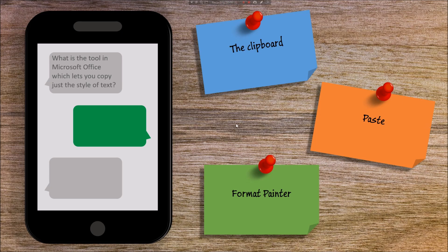Here I have it running now. On the left-hand side I have my simulated mobile phone, and on the right-hand side I have three possible responses. On the left we've got a text message that says 'What is the tool in Microsoft Office which lets you copy just the style of the text?' and it's up to us to fill this response with one of these three answers.